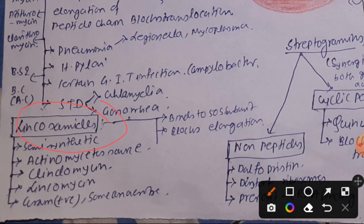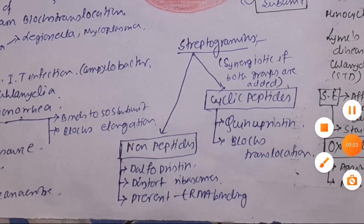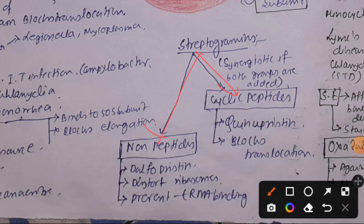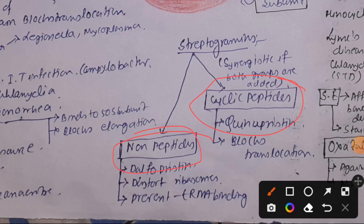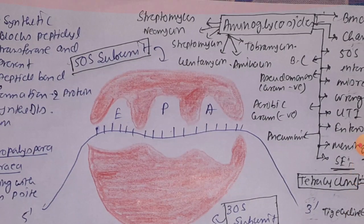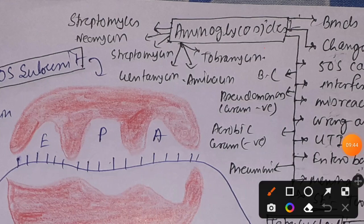Lincosamide examples are lindomycin and lincomycin. It is semi-synthetic, isolated from Actinomyces, binds to the 50S ribosomal subunit, and blocks elongation. Streptogramins are divided into non-peptide, such as dalfopristin which distorts the ribosome and prevents tRNA binding, and cyclic peptide, such as quinupristin which blocks translocation. Importantly, when both types are used together synergistically, the combined effect is enhanced.